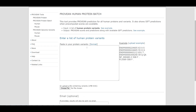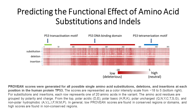You can also perform multiple protein variant analysis using the PRUVIAN protein batch function. In this example, PRUVIAN scores were generated for all possible single amino acid substitutions, deletions, and insertions at each position in the human protein TP53. The scores are represented as a color intensity scale from -18 to 5. For substitutions and insertions, each row represents one of the 20 amino acids in the variant, grouped by polarity and charge.